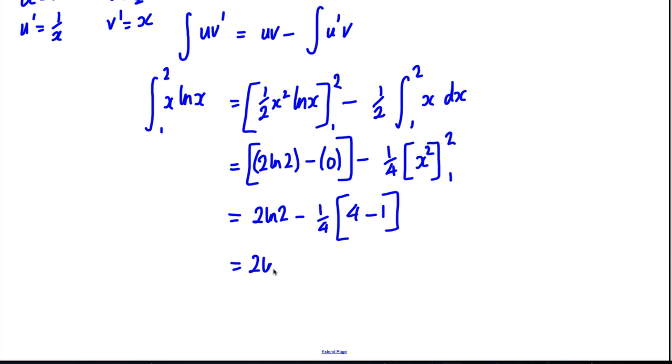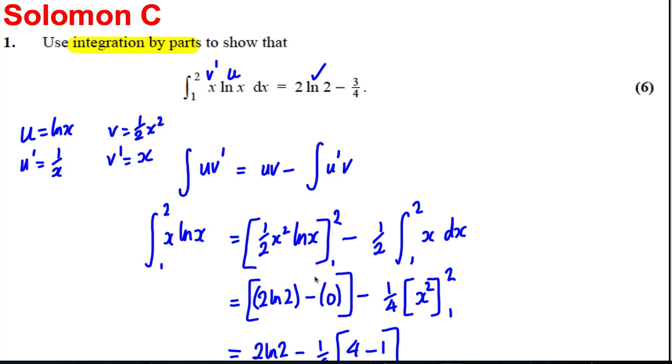So it's therefore two ln two subtract three quarters and that's exactly what we were looking for in the question. So we're done for an easy six marks.